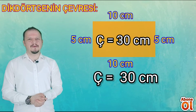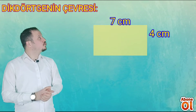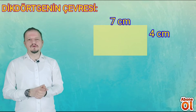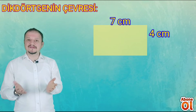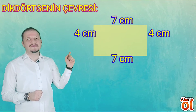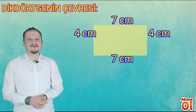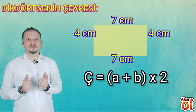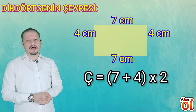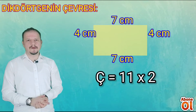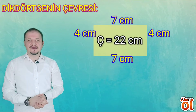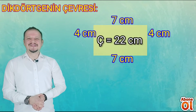Bir örnek daha yapalım. Bakın yine bir dikdörtgen görüyorsunuz. Uzun kenarı 7 santimetre, kısa kenarı da 4 santimetredir. Uzun kenarı 7 ise karşısındaki da 7; kısa kenarı 4 ise karşısındaki de 4 santimetredir. Uzun kenarla kısa kenarı topluyoruz ve 2 ile çarpıyoruz: 7 + 4 = 11, 11 × 2 = 22. Bu dikdörtgenin çevresi 22 santimetreymiş.